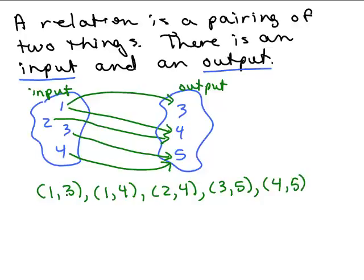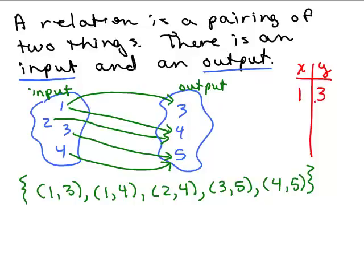Notice I have four lines, so there should be four ordered pairs. We could write that as a set using braces, or do it in a little table. Let's say the input we'll call X and the output we can call Y. If the input is 1, the output was 3. Also, when I had an input of 1, I was able to get an output of 4. When I input a 2, I got an output of 4. When I input a 3, I got an output of 5. And when I input 4, I also got an output of 5.